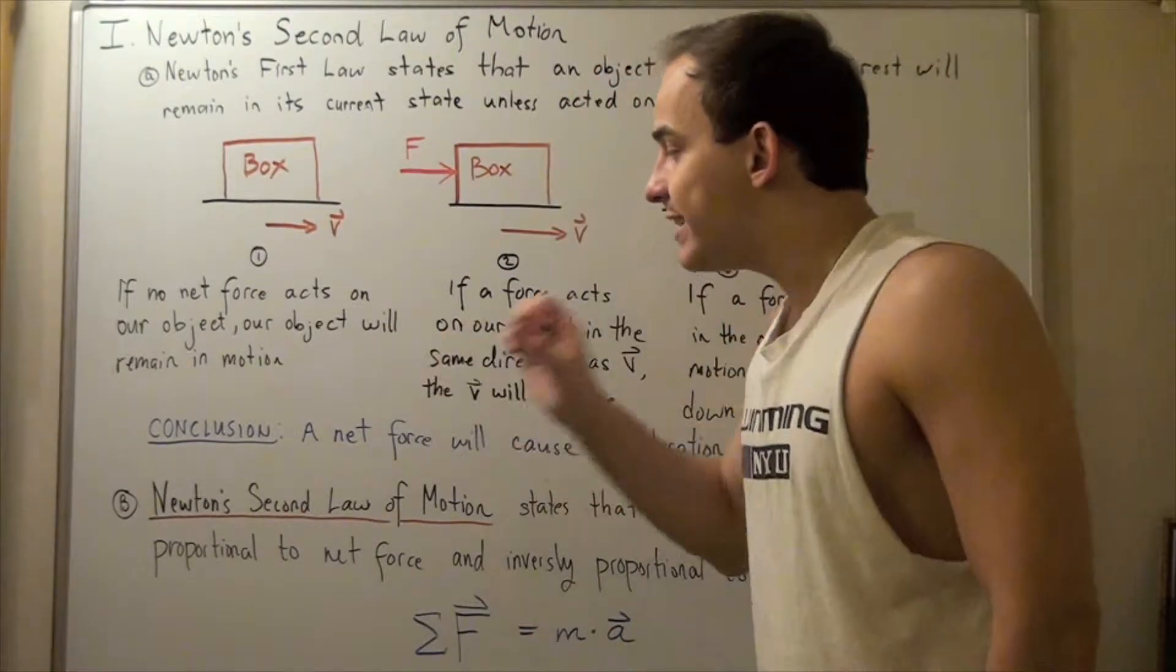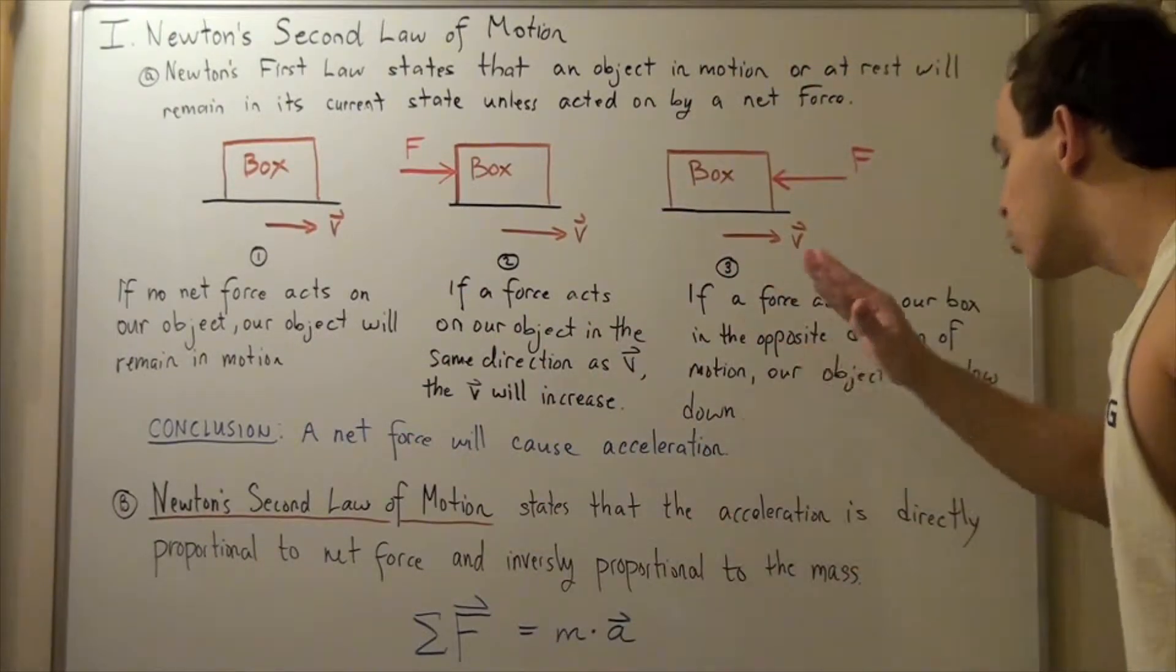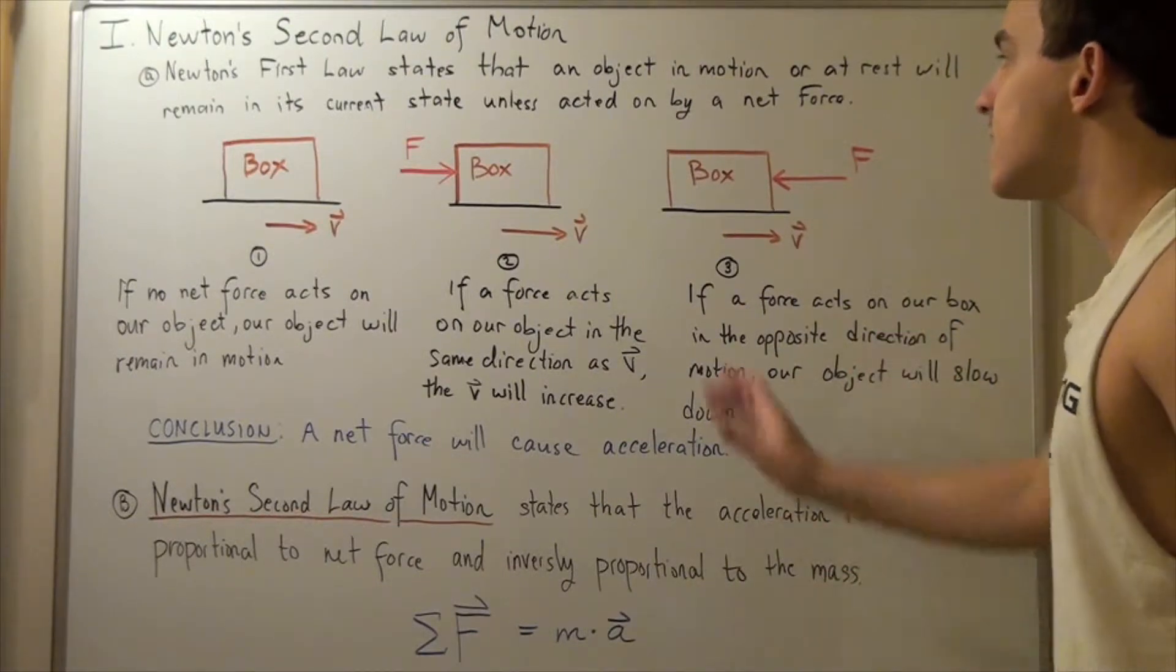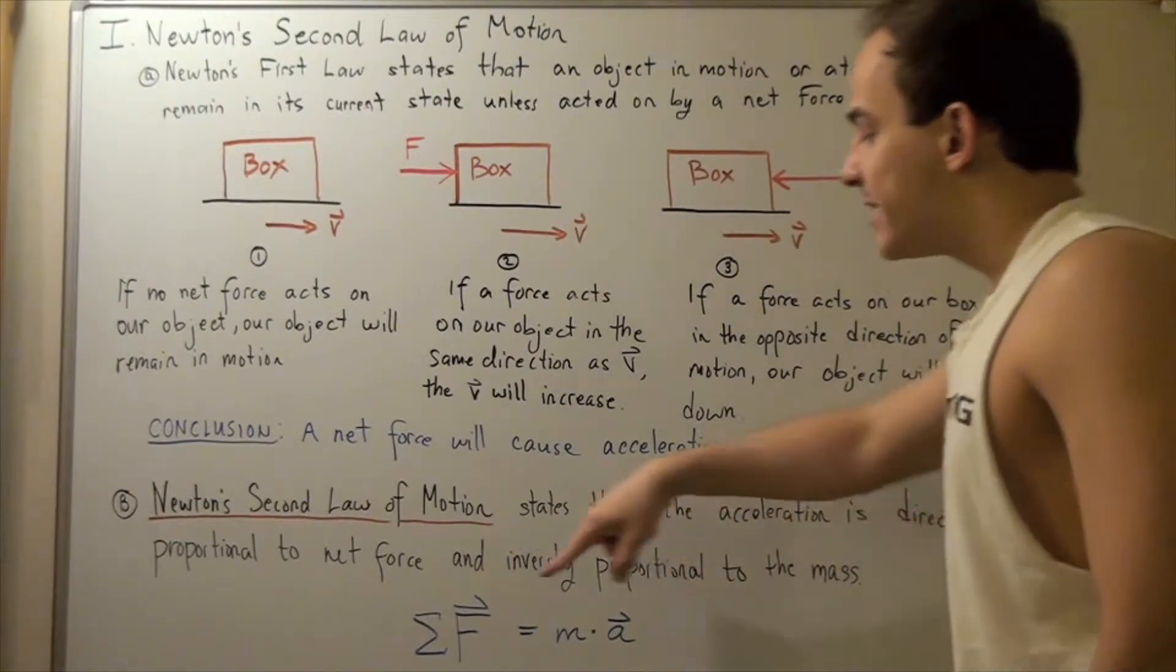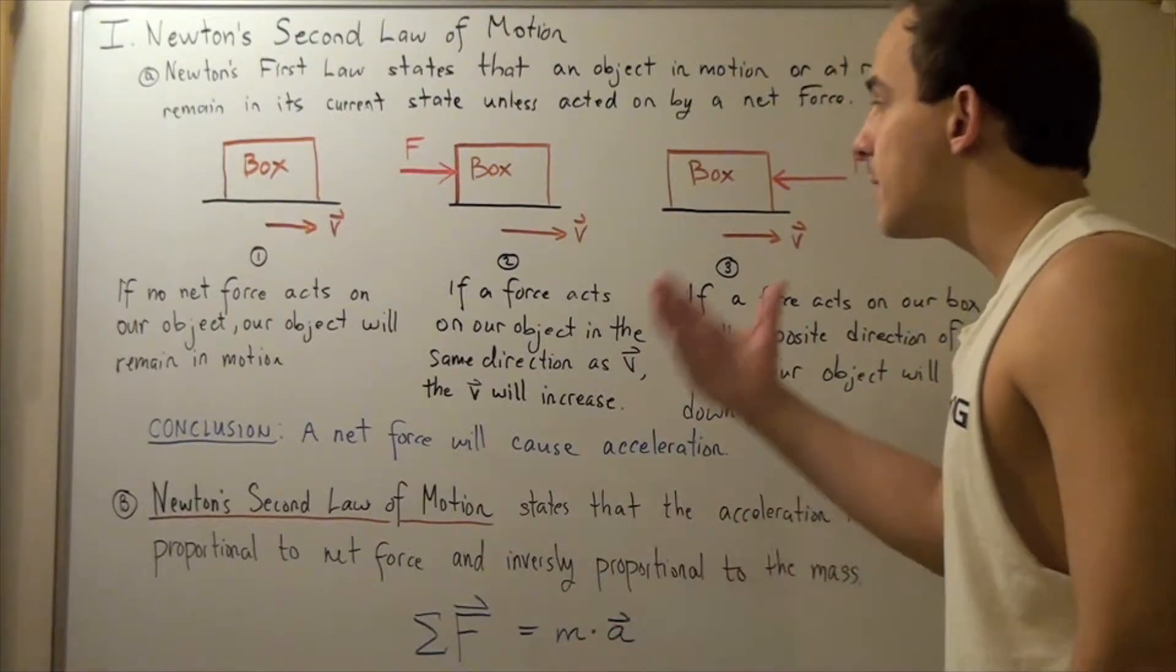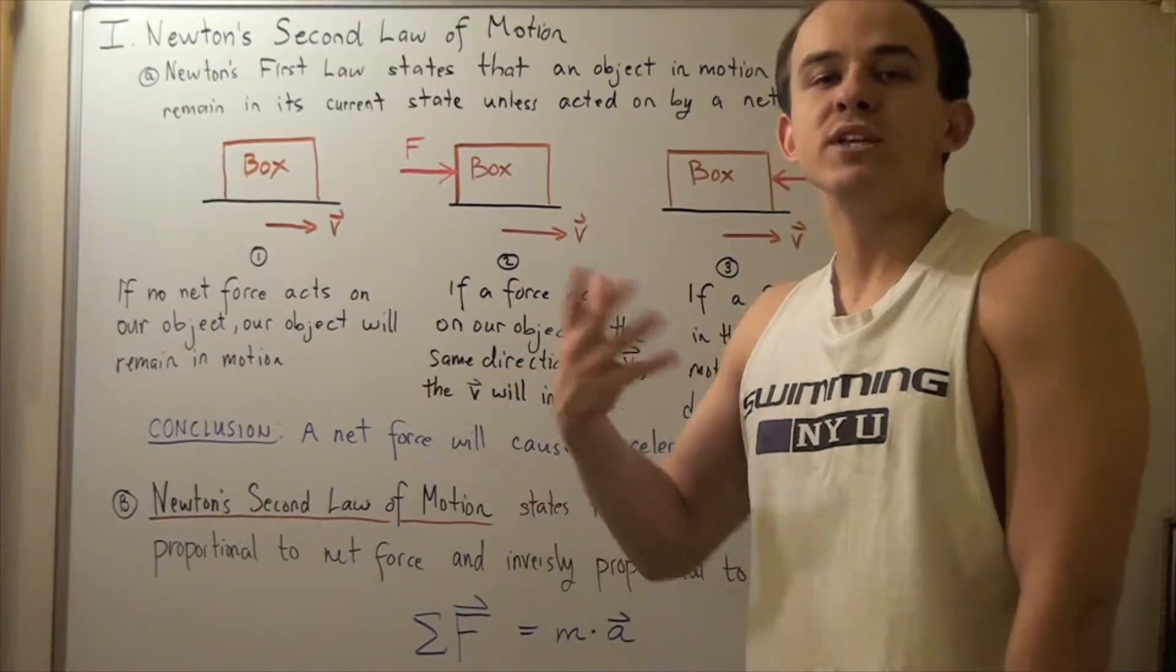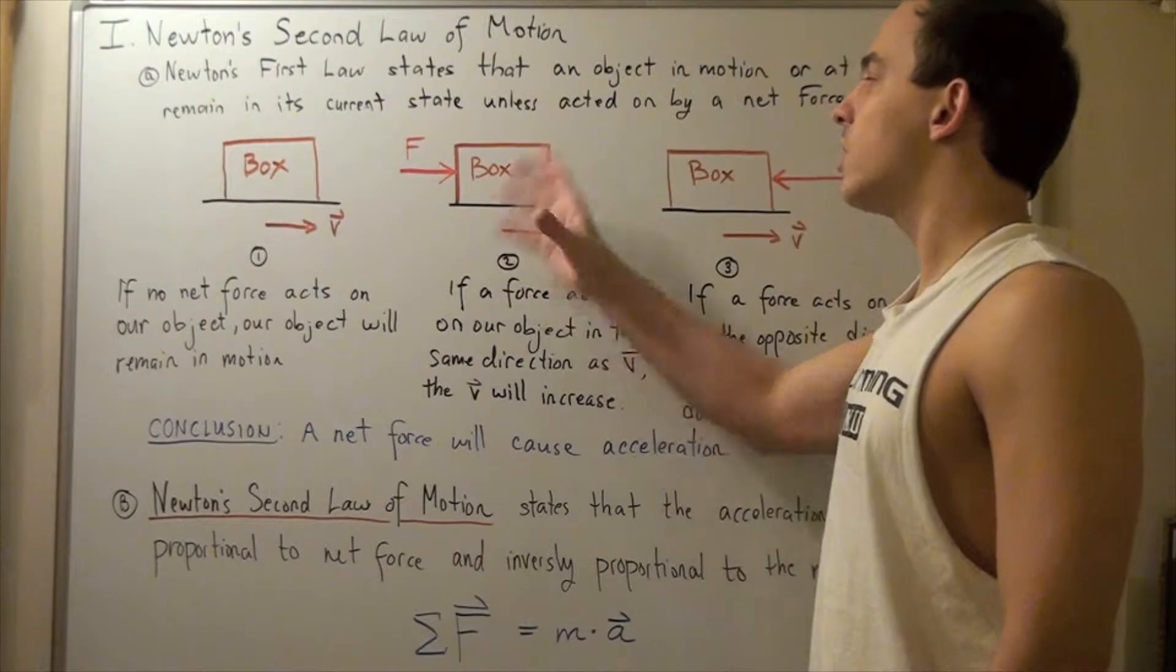Now let's jump right into Newton's second law of motion. Newton's second law of motion states that the acceleration is directly proportional to the net force supplied and inversely proportional to our mass of the object, in this case our box. And it's given by the following formula. The net force is equal to mass times acceleration. Our mass is the mass of the object, in this case our box. This summation symbol simply means we're summing all the vectors up and we get our net force on the object.